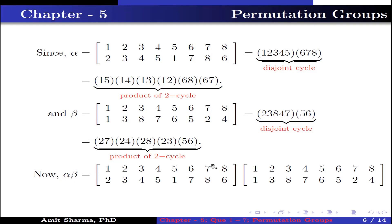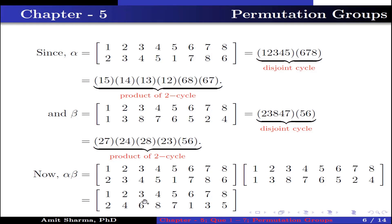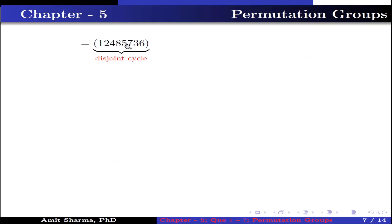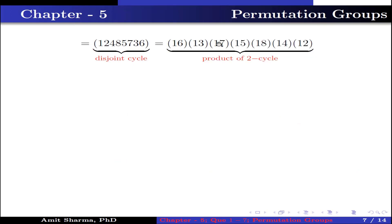The product alpha beta is computed by applying beta first then alpha. Here: 1→1→2 so 1 has image 2; 2→3→4 so 2 has image 4; 3→8→6 so 3 has image 6; 4→7→8 so 4 has image 8; 5→6→7 so 5 has image 7; 6→5→1 so 6 has image 1; 7→2→3 so 7 has image 3; 8→4→5 so 8 has image 5. This is written as the disjoint cycle (1 2 4 8 5 7 3 6), which as a product of 2-cycles is (1 6)(1 3)(1 7)(1 5)(1 8)(1 4)(1 2).